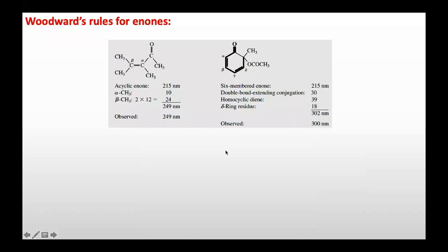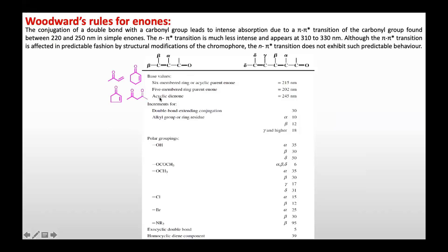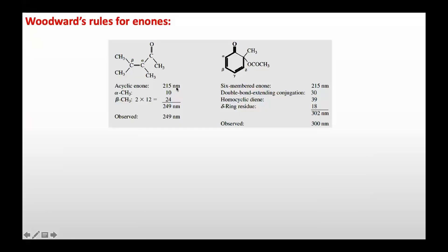Let's calculate using an example. This is an acyclic enone. The acyclic enone parent value from the table is 215 nanometers. There is one substituent at the alpha position, increasing the value by 10. There are two beta substituents; one beta substituent adds 12, so two add 24. Adding all values gives a total of 249 nanometers. The observed value is also 249 nanometers — the Woodward-Fieser rule perfectly predicted the lambda max for this enone.